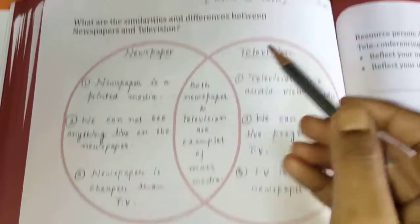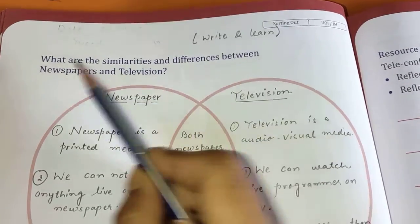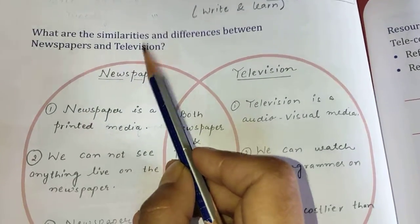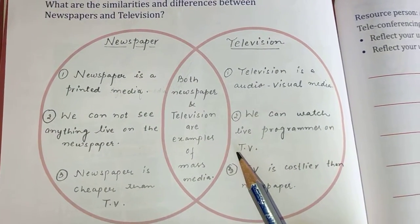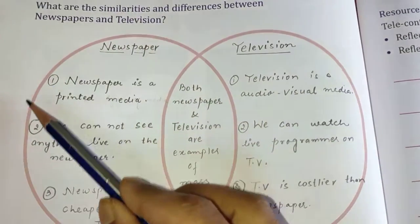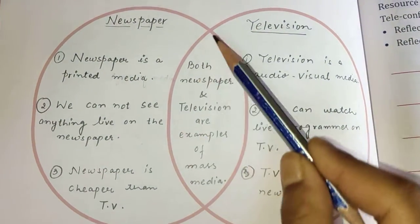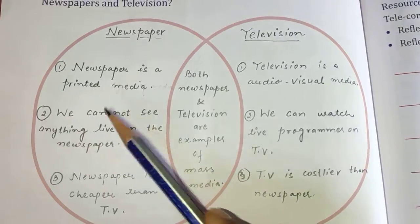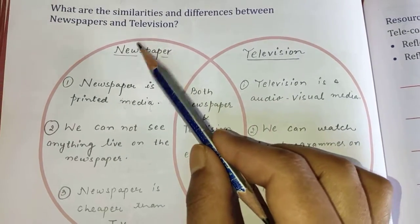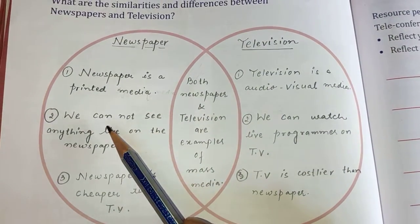On page number 29, you have to write the similarities and differences between newspaper and television. There are two overlapping circles — a Venn diagram. The overlapping area in the middle is where we write similarities, and the outer areas of each circle are where we write differences.